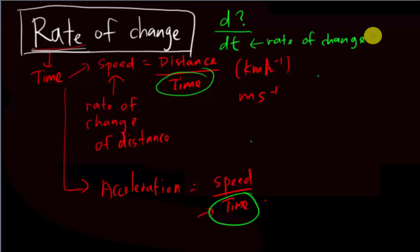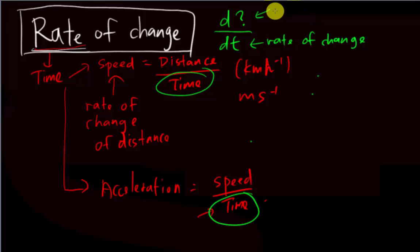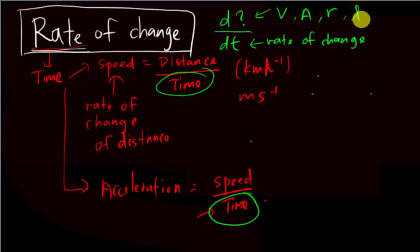Whenever you see rate of change, you must write dt at the bottom, and the top depends on the question. There are many possibilities for the numerator — in your exam they often give you volume, area, or radius (r). It can also be length (l), or it can be y or x. It depends, but the key point is time always goes at the bottom.